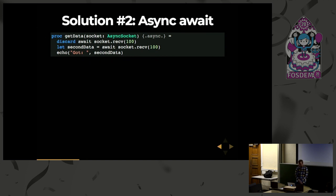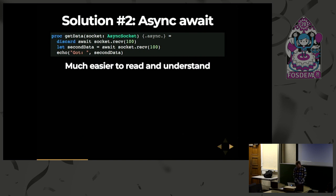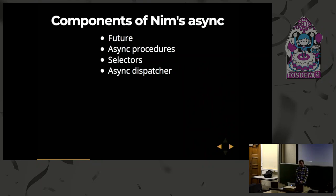But let's first go through how all of the components of NIM's async fit together. There really isn't much to it — there are four components: you've got your future, your async procedures, the selectors module, and the async dispatcher. So let's look at these in a little bit more detail.